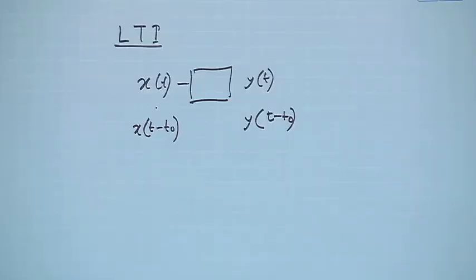For a linear time invariant system, it has to be linear. That means, whatever input you give, if you know the corresponding output, and if you give a linear combination of the input, you should expect the linear combination of the output. Time invariant means, if a particular input x(t) through a system gives y(t), and if I delay the input by t minus t0, the output will be similarly delayed by the same amount.